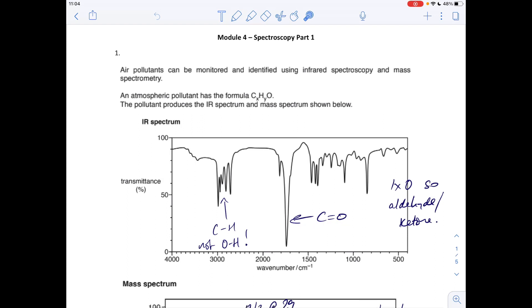So I always encourage my students to annotate the spectra, so put an arrow off a peak or an absorption and just say what kind of bond that's due to. So we've got a C double bond O in this molecule. There's only one oxygen so it's either an aldehyde or a ketone.